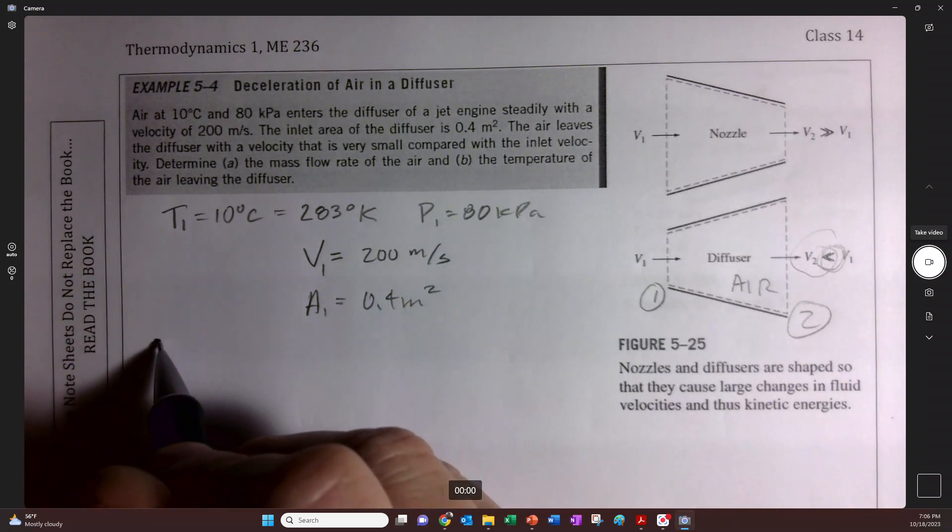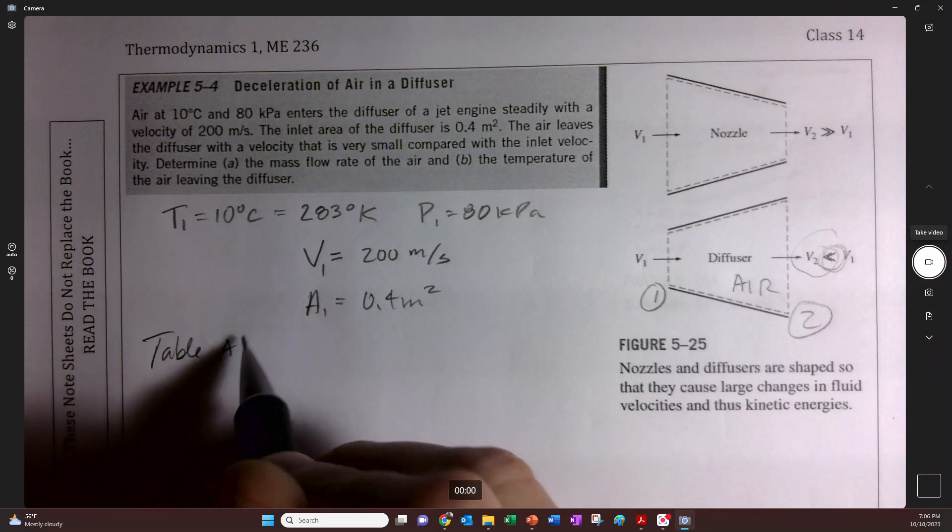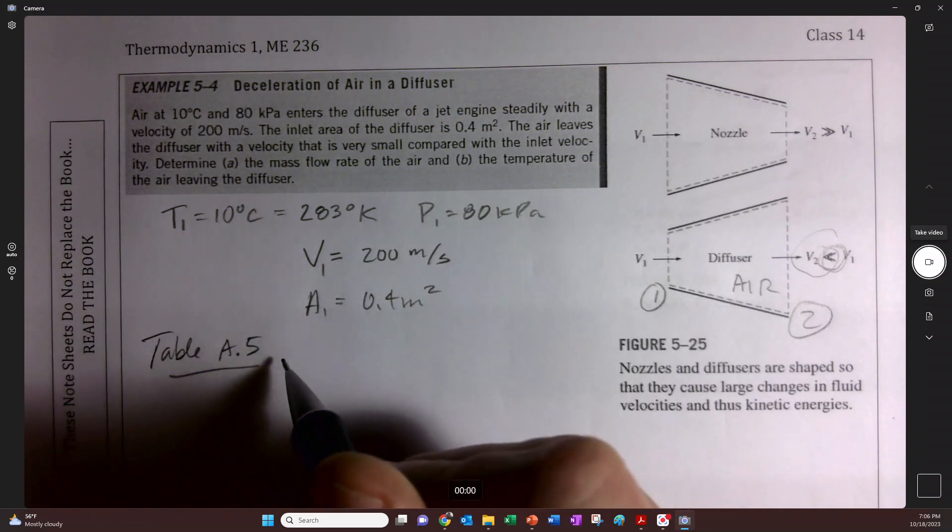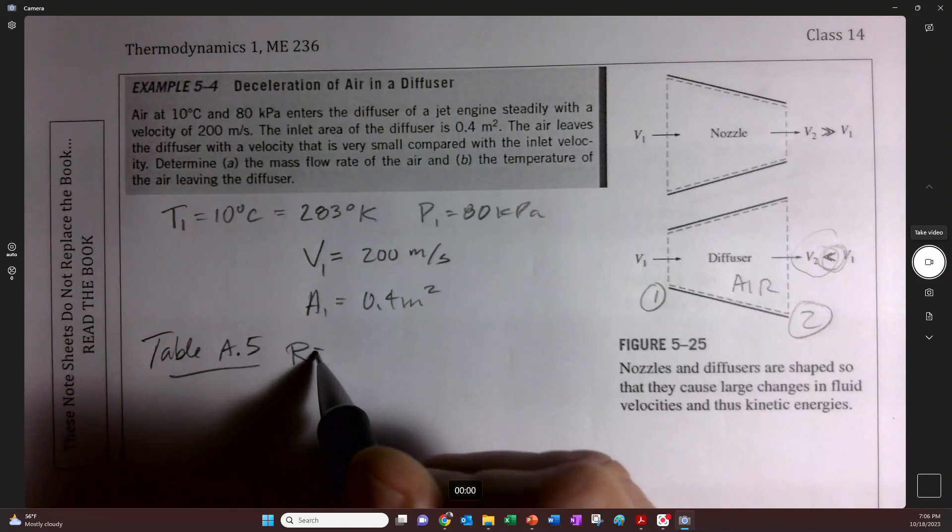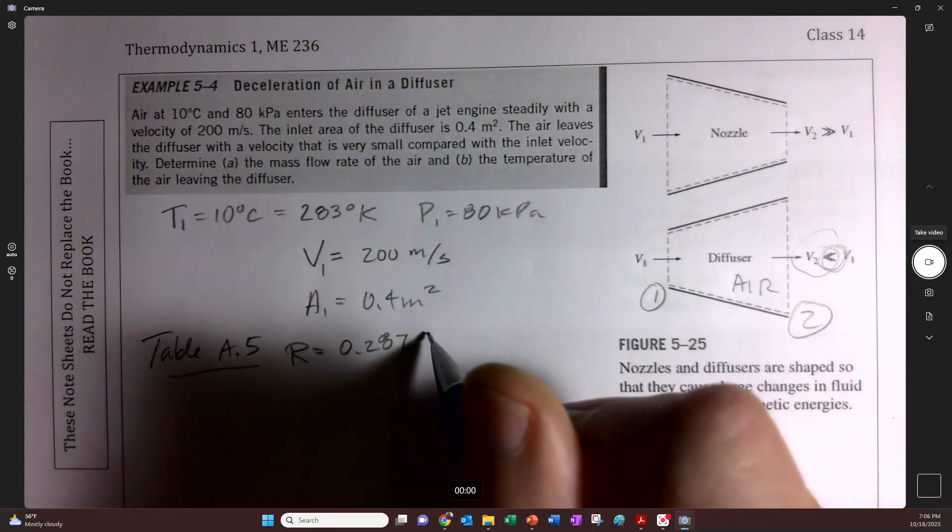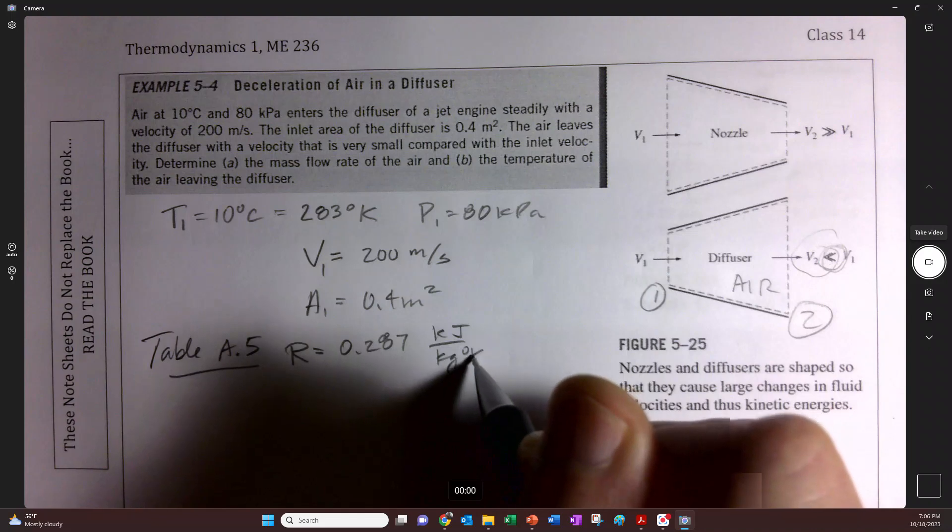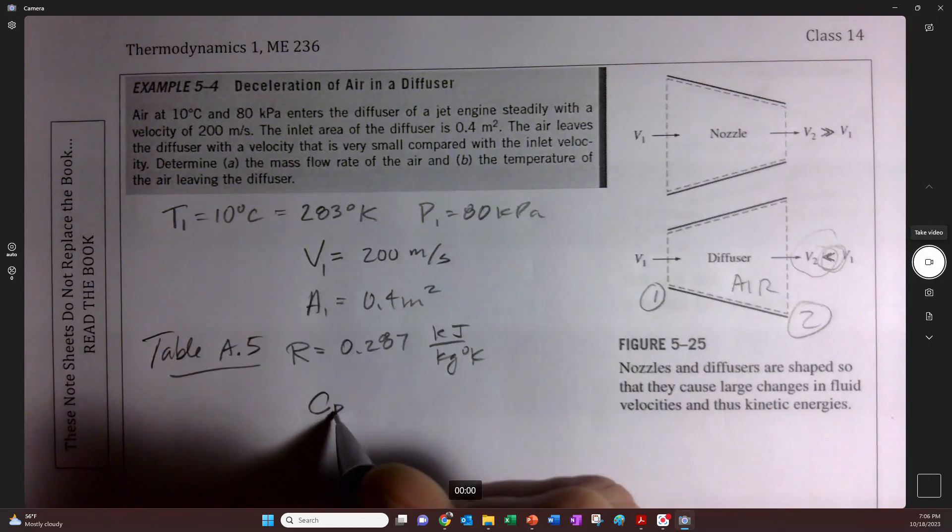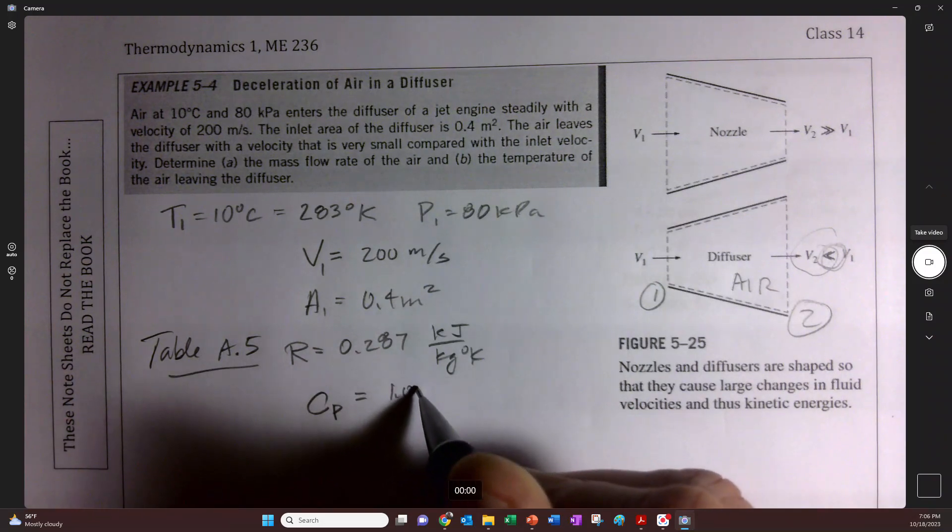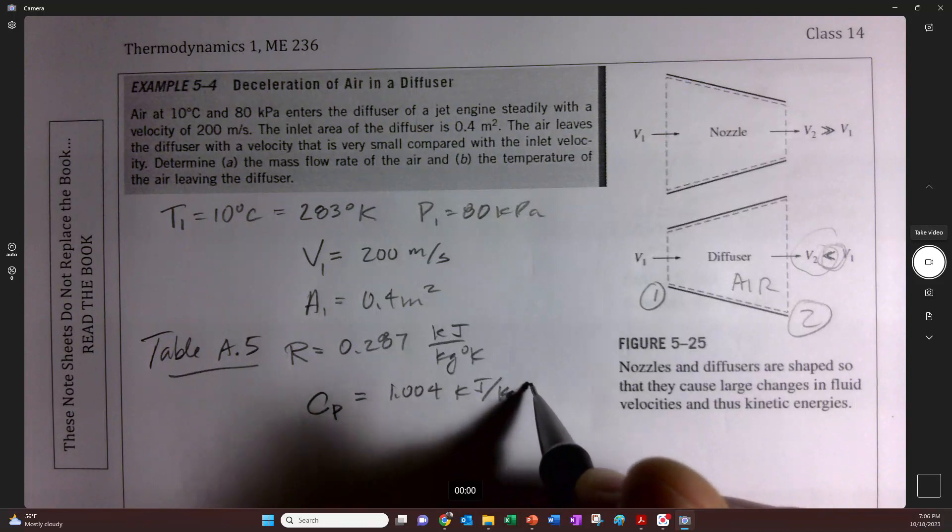So maybe we want to look up a table in our book, because this is Sengel, table A5. The gas constant R is 0.287 kilojoules per kilogram degree Kelvin. And while we're there, we can get CP, 1.004 kilojoules per kilogram degree Kelvin.